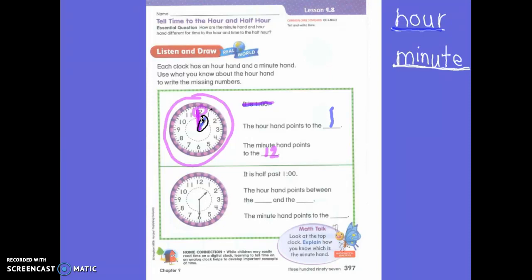So we see that it is pointing to the one. So I say one, and then my minute hand is pointing to the twelve, and that says one o'clock. So what time is it? One o'clock.